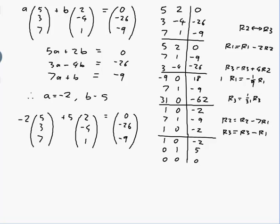So I have written (0, -26, -9) as a linear combination of those other two vectors. Now the next part of the question says to show that (1, 3, 5) cannot be written as a linear combination of those vectors. Well that means I'd be doing the same problem again.